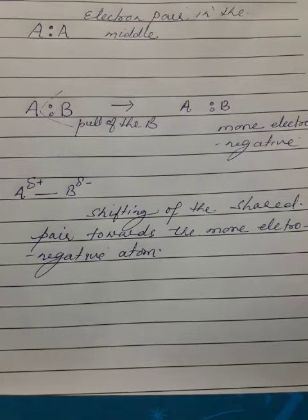Hello everyone, today I will explain about electronegativity. The formation of covalent bonds involves the sharing of valence electrons between the combining atoms. A single covalent bond is formed when the combining atoms share one electron each.